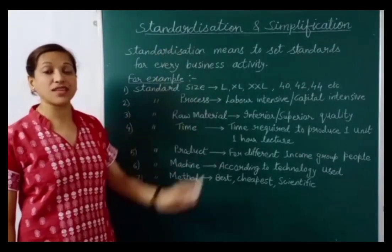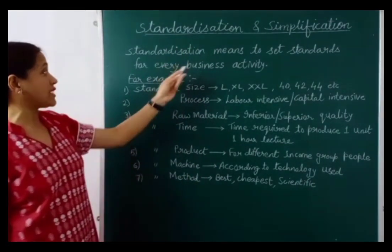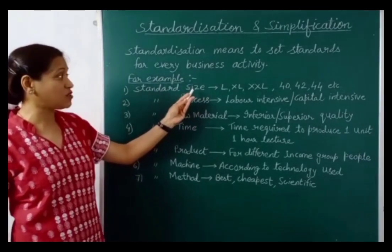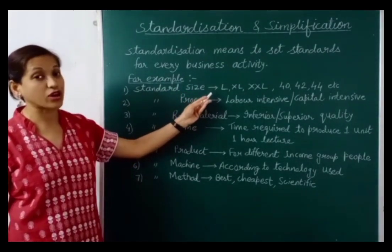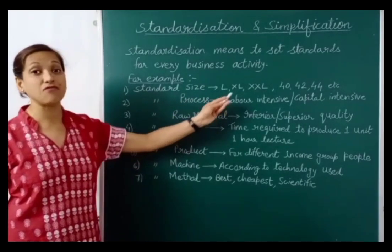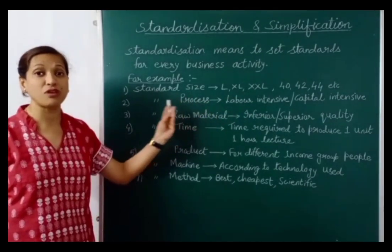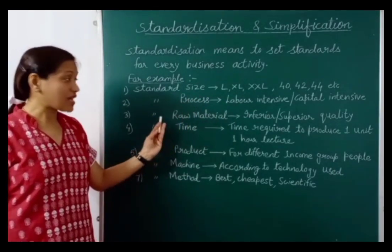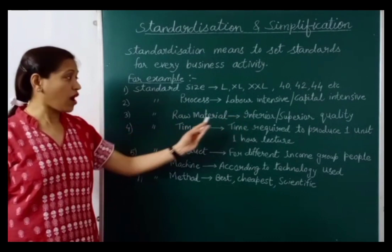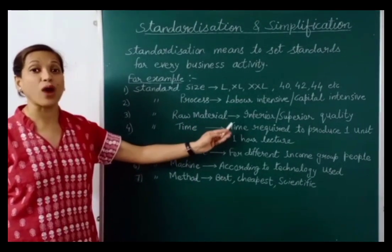Now we will study the second technique: standardization and simplification of work. Standardization means setting standards for every business activity — for example, standard size, standard process based on whether the company is labor-intensive or capital-intensive, standard raw material such as inferior or superior quality, and standard time meaning the time required to produce one unit.